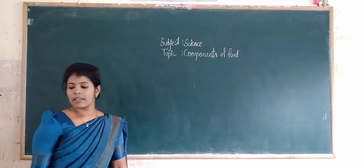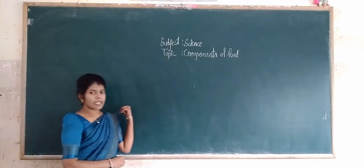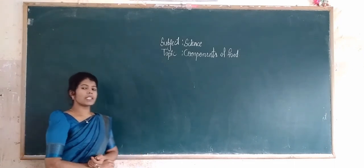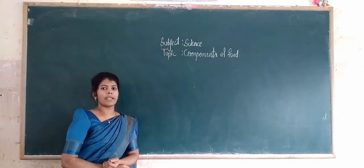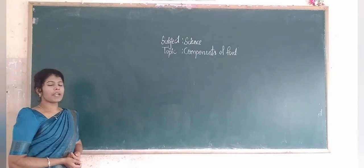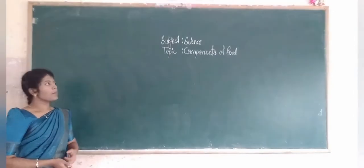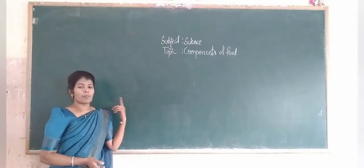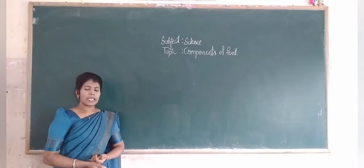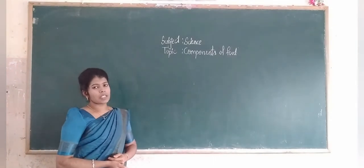From where do we get nutrients? We get nutrients from food. Nutrients are very essential to maintain and grow our body. We are eating different kinds and different varieties of food because we need different components for our body. According to seasons, our food also changes.